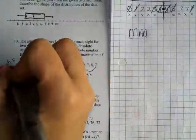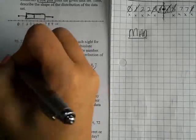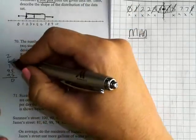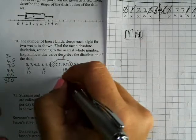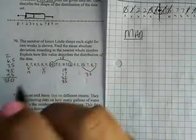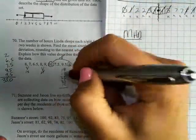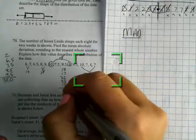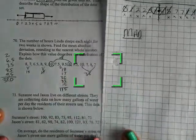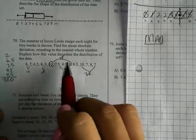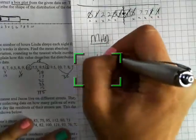Adding up all the data values: I get partial sums of 18, 17, 32, 33, and 15, which gives a total of 115. There are 14 numbers total, so I need to divide 115 by 14.